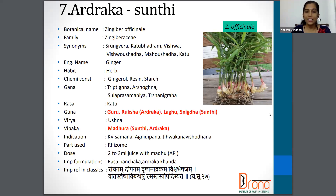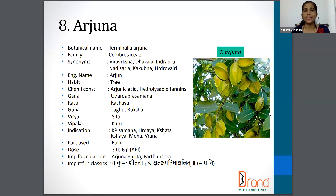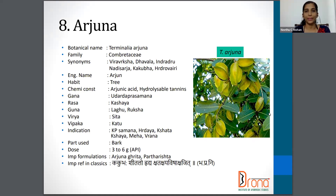The next one is Arjuna — Terminalia arjuna, Combretaceae family. Synonyms are Veeravriksha, Dhavala, Kakubha, Kaktrovairi, etc. The English name is the same as the common name, that is Arjun. The part used is bark, and the dosage is 3 to 6 gram as per API.